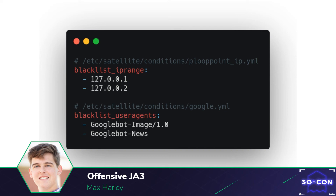Another great feature of Satellite is global conditionals. If you have a set of conditions that your team always wants to constrain on, you can create conditional files in the /etc/satellite/conditions directory. These rules will be applied to all routes in the server route. In this example, we're blacklisting two IPs from a known email filtering service and also blacklisting two of Google's automated scanner user agents. The great thing about this is that they're managed in two separate files that may be downloaded from GitHub, and therefore managed by different people without getting in the way of each other.